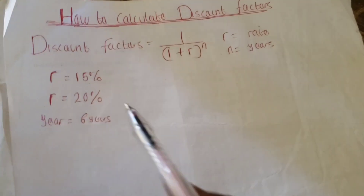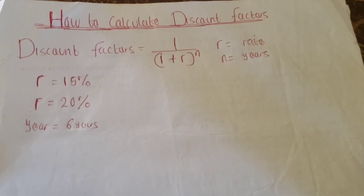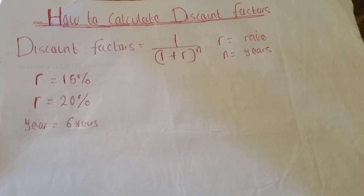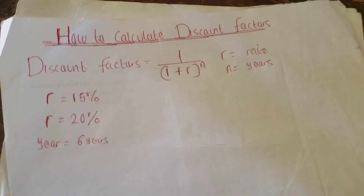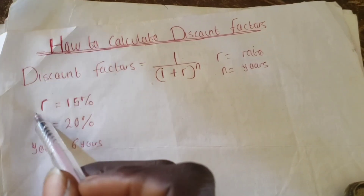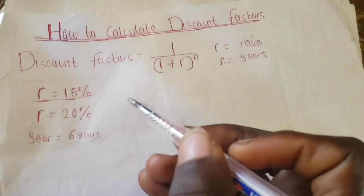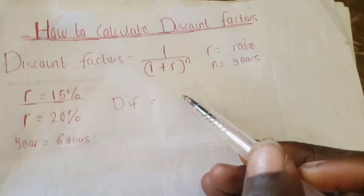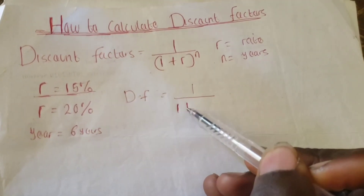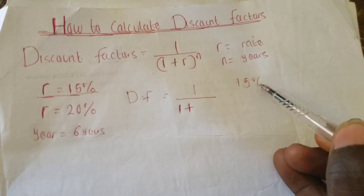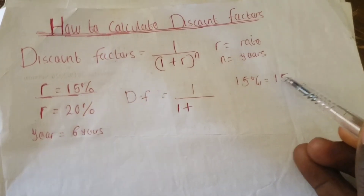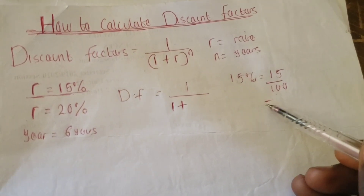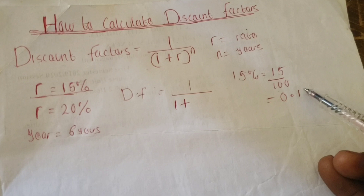We got the discount factor for each of the six years. Now let's say we want to calculate the discount factor for year one at 15 percent. The discount factor — let me represent it as DF — equals 1 over (1 + 15%). Now, 15 percent equals 15 over 100, which is 0.15.